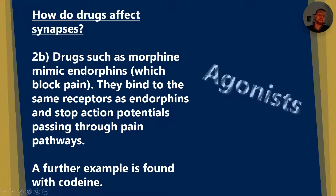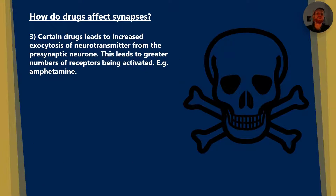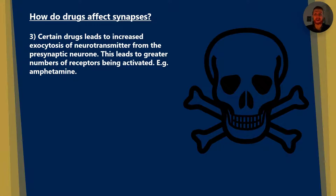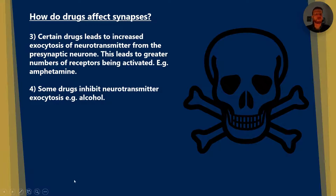A further example is found with codeine. Certain drugs lead to increased exocytosis of neurotransmitter from the presynaptic neuron, leading to greater numbers of receptors being activated. Amphetamine is an example of a drug in this category. Some drugs, however, will inhibit neurotransmitter exocytosis, and alcohol is an example of this, which is partly responsible for its effects.